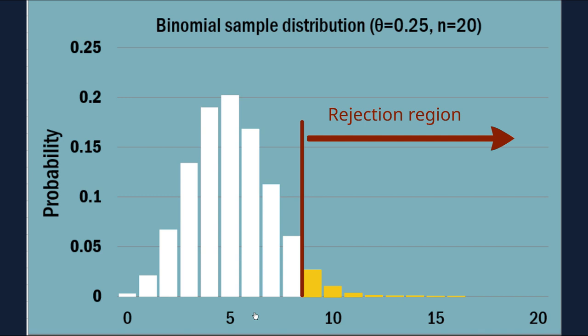So there, I've written it there, rejection region and we're going to do so if x, the number of Rosewood students experiencing anxiety, is greater than or equal to 9, because this is the number 9 here. But we got 8. We're on this side. In other words, we do not reject the null hypothesis. It didn't manage to get us in the rejection region.